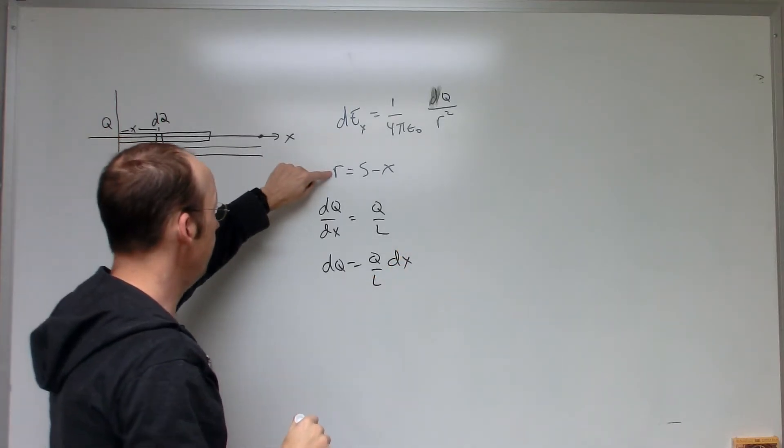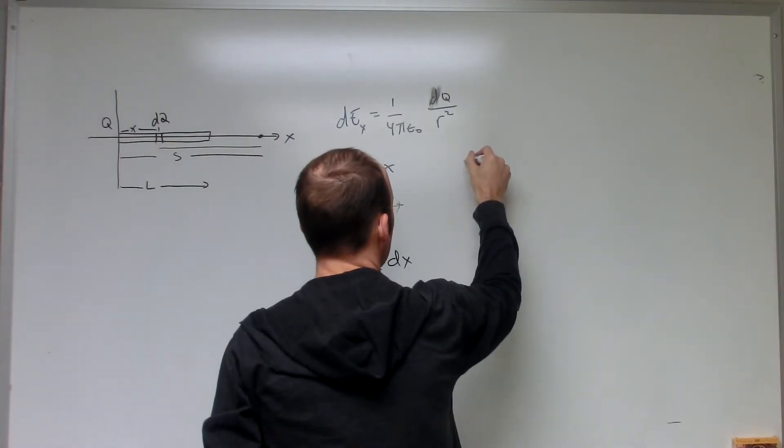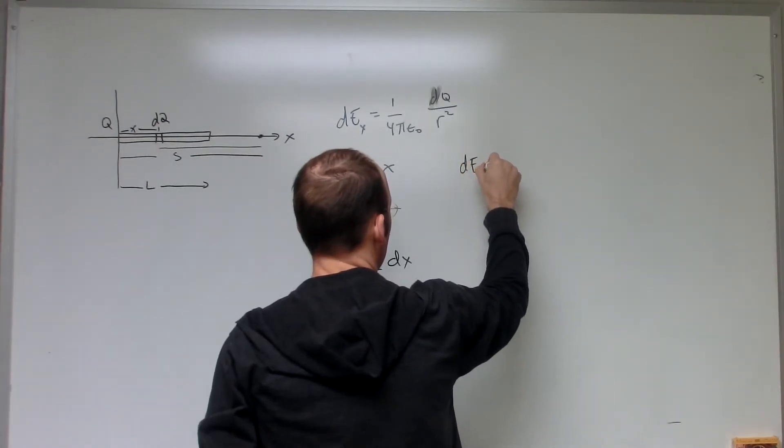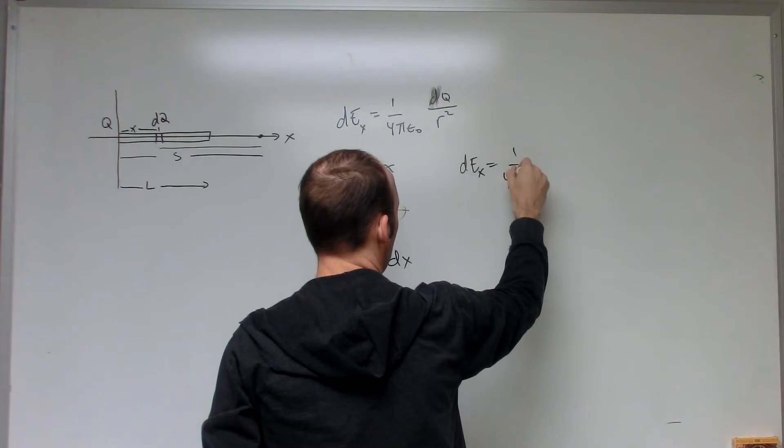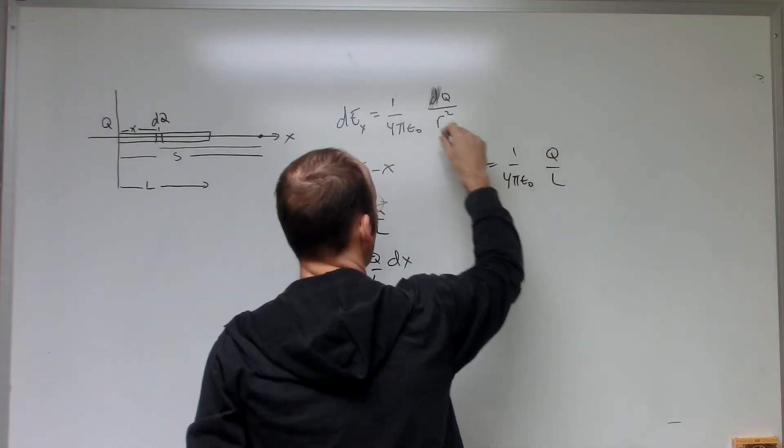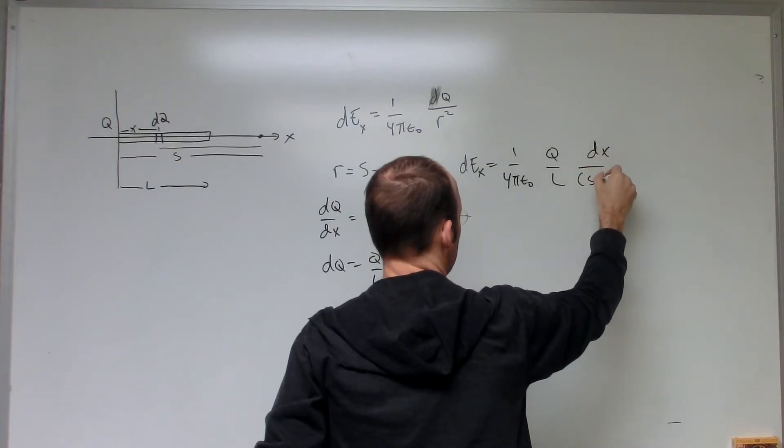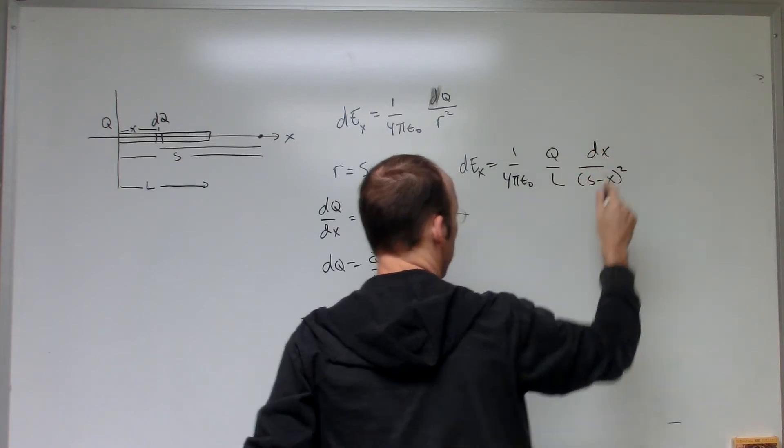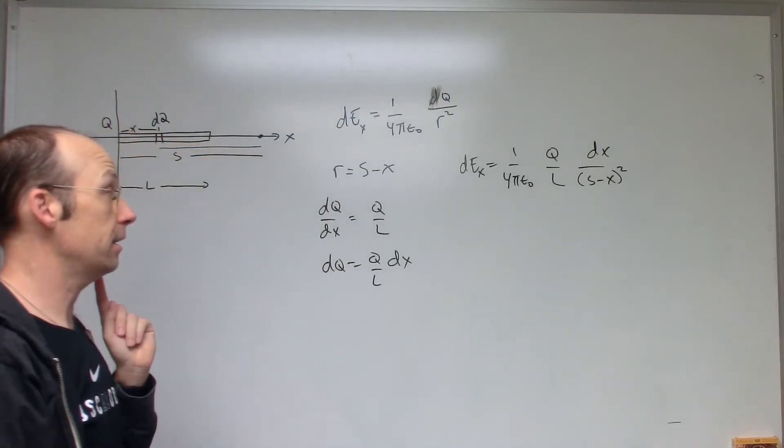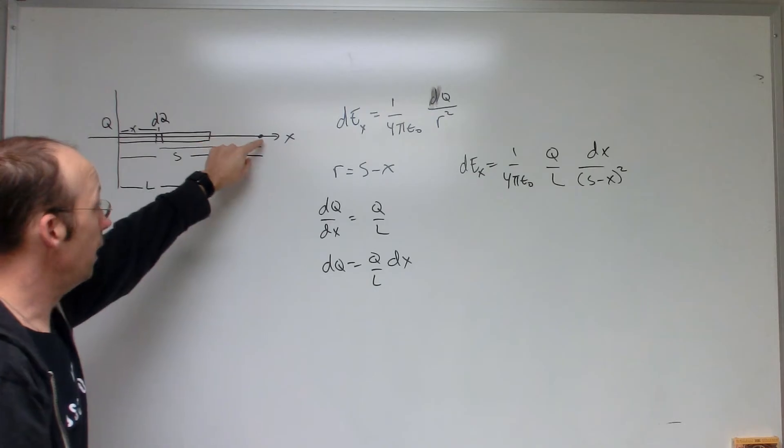So now I can put this in, I can put this in, and I get DE_X, 1 over 4 pi epsilon naught, Q over L, DX, S minus X squared. That's the contribution of the electric field due to this piece at that location.